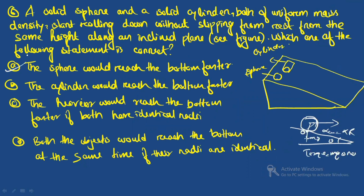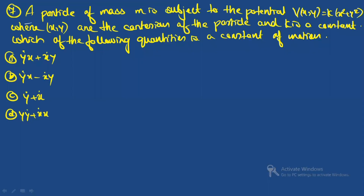Question seven: a particle of mass m is subject to potential V = k(x² + y²). Which quantity is a constant of motion? We write the Lagrangian and look for cyclic coordinates — a coordinate missing from the Lagrangian means its corresponding momentum is conserved.